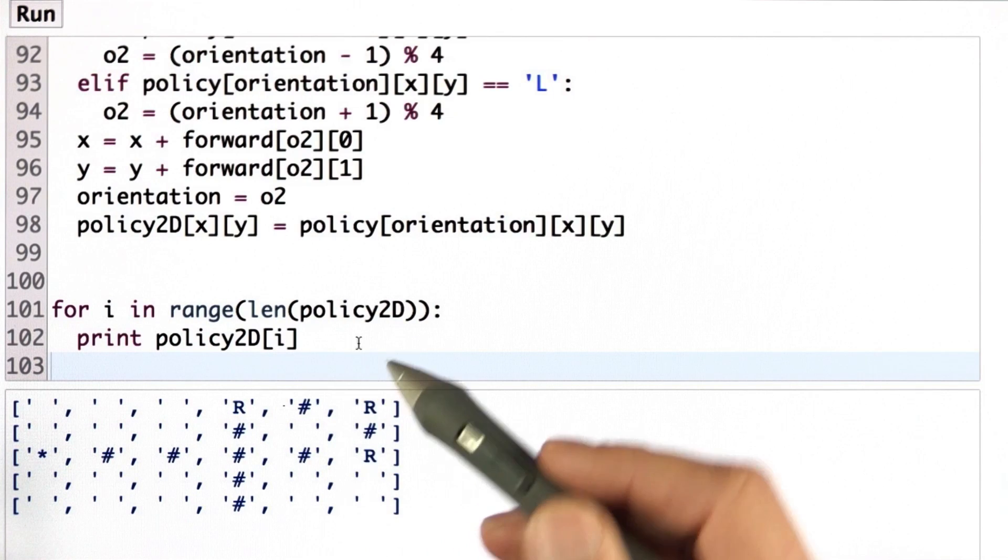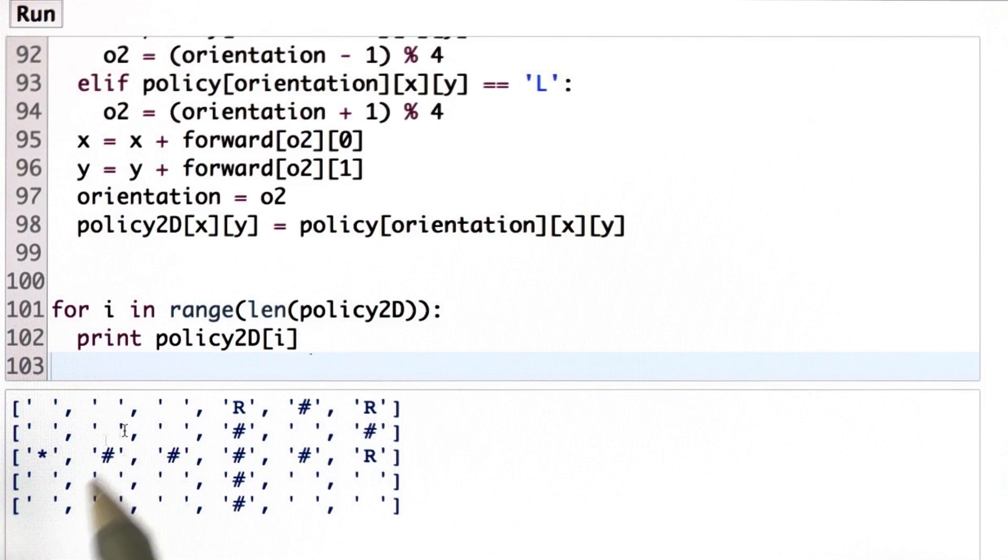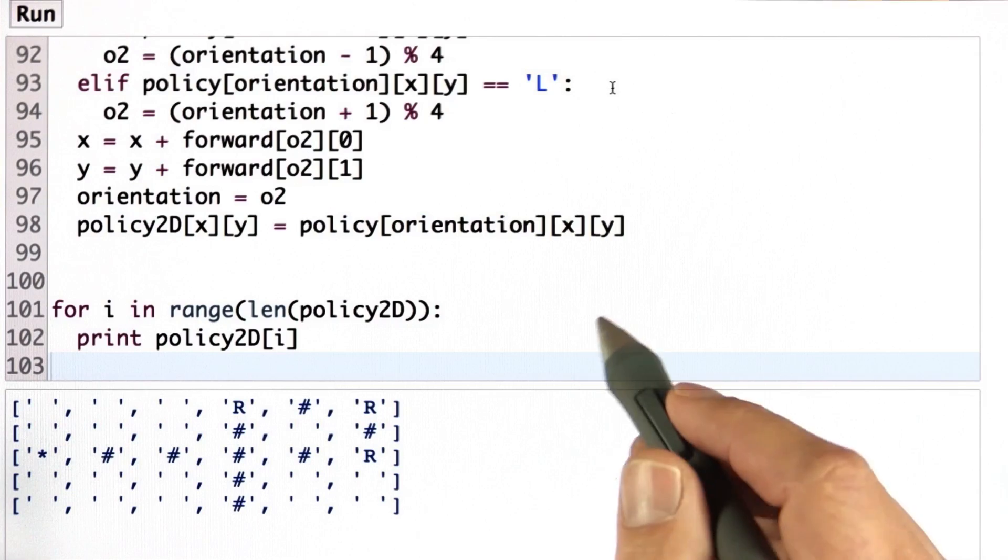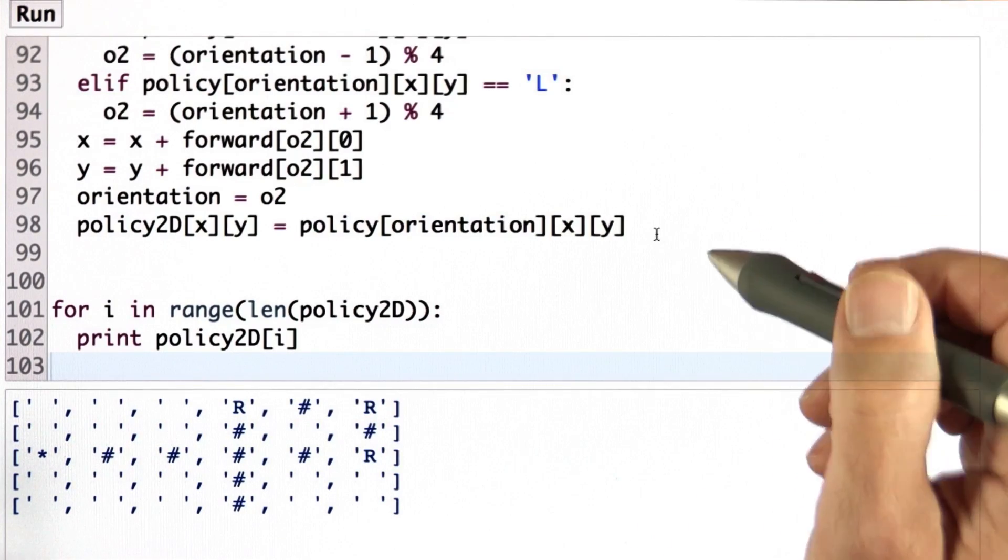The key insight here is to go from the three-dimensional full policy to the two-dimensional array, I had to run the policy. And that's something you would have done to get back this table over here. That's somewhat non-trivial. I didn't tell you this, but I hope you figured it out. But everything else is the same dynamic programming loop that you've seen before.